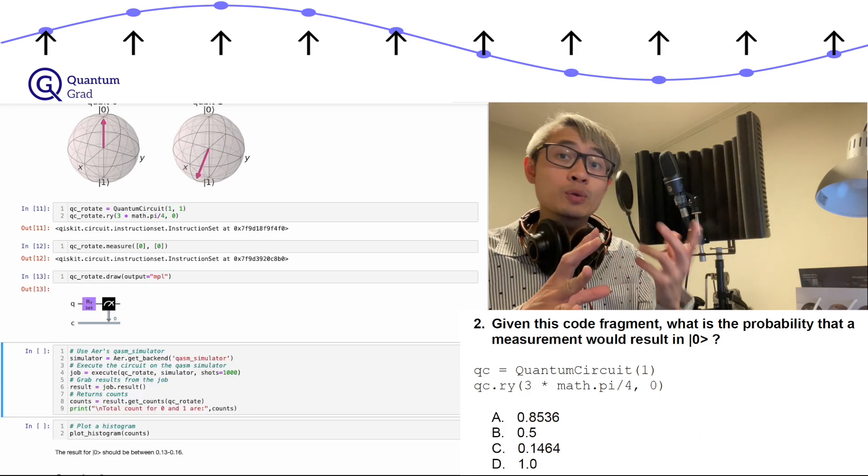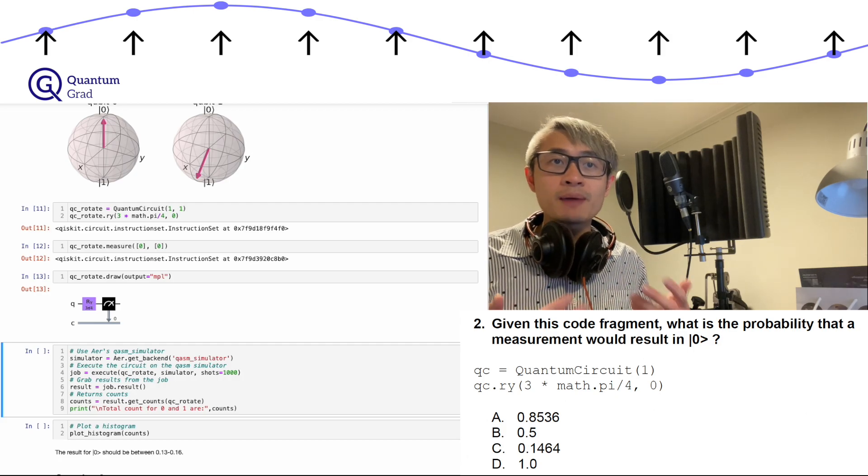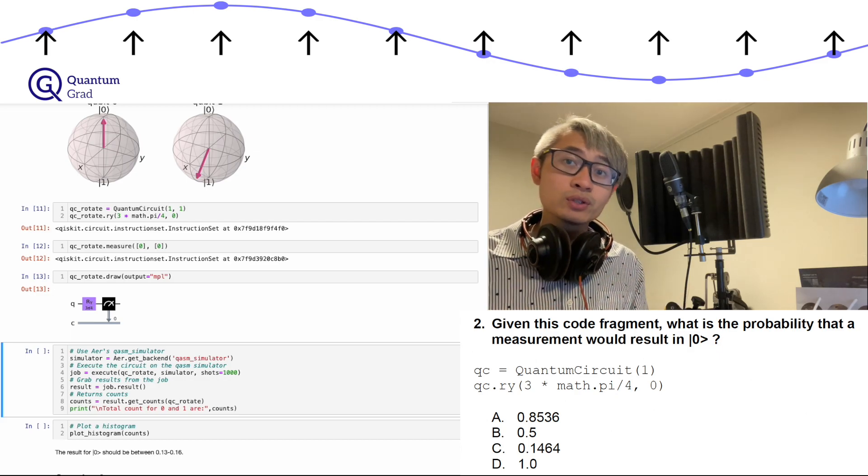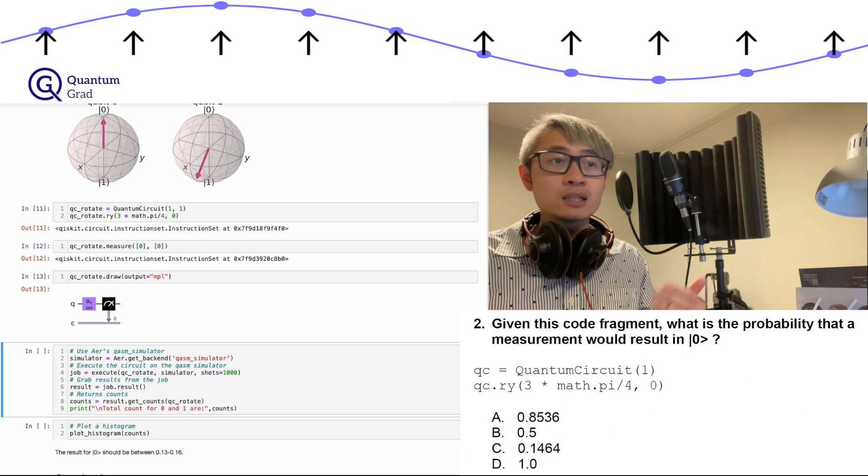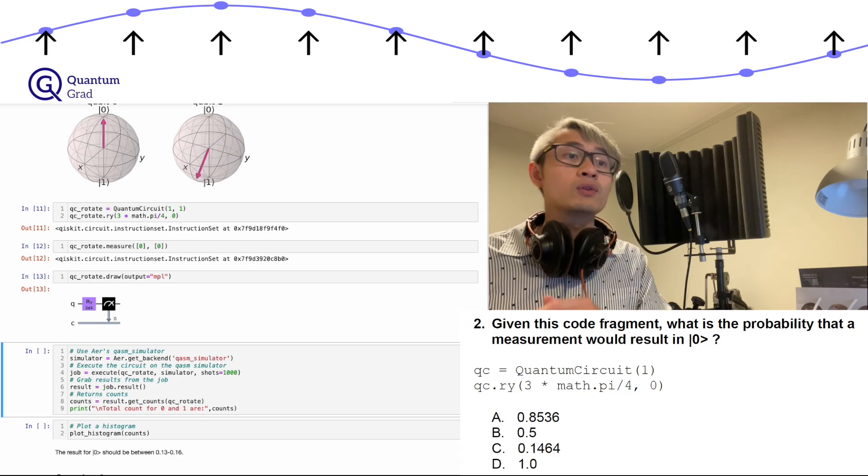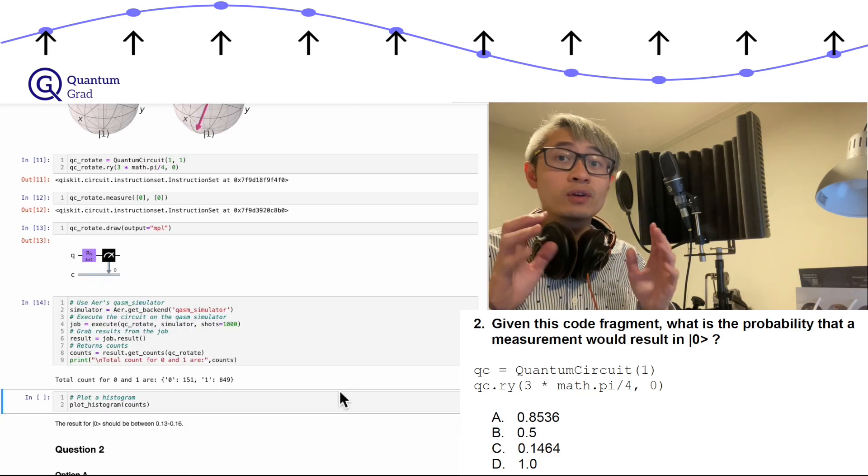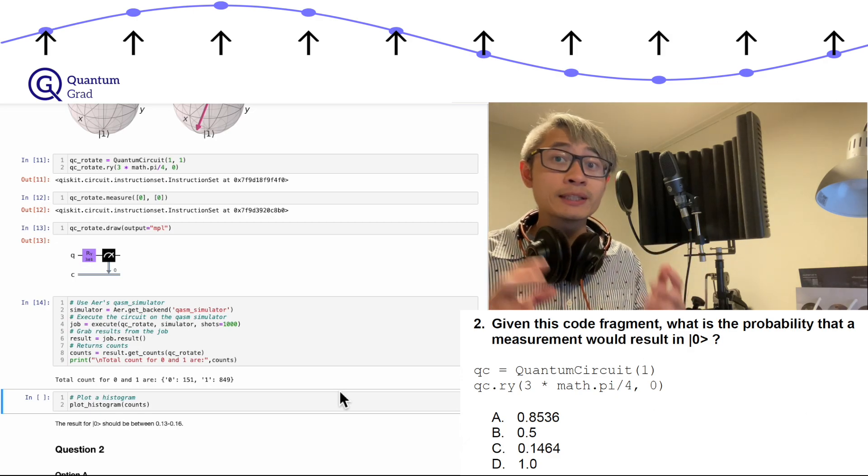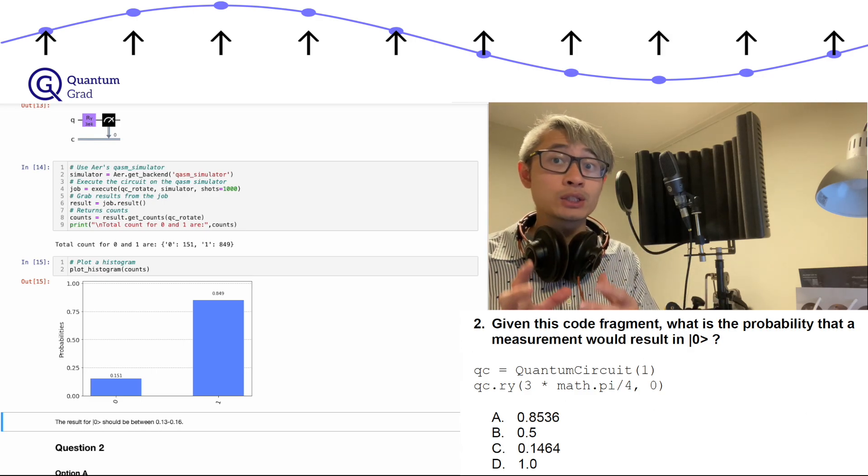Now we can see how it looks like to store the information from the collapsed qubit to the classical bit. Now we use a similar method in calling the backend as before. This time we call the QASM simulator from Aer. So now we have to use QASM simulator, that is aer.get_backend. Next we execute the circuit on the QASM simulator, and then we grab the result from the job. We return the counts and then we print the counts. So now we have 151 counts in the state zero and 849 counts in the state one.